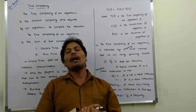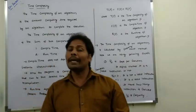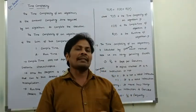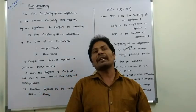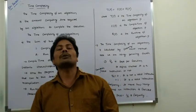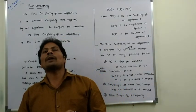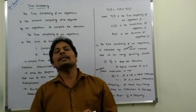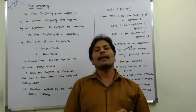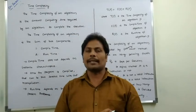How do we find the time complexity of an algorithm in another way? The time complexity can be calculated using the step count method. In the step count method, we use two factors: one is the frequency, and another is steps for execution (S/E).